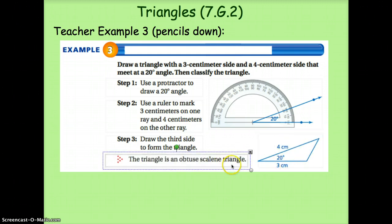And the triangle is an obtuse scalene triangle. Here I can clearly see that this angle is obtuse. Also, I can see that this side is much shorter than the other two, so it must be scalene. All three sides being different.